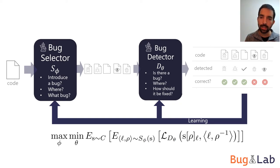The detector needs to find these bugs and apply the inverse rewrite to beat the selector. Note that this framework resembles GANs, but the code rewrites are non-differentiable, discrete operations.